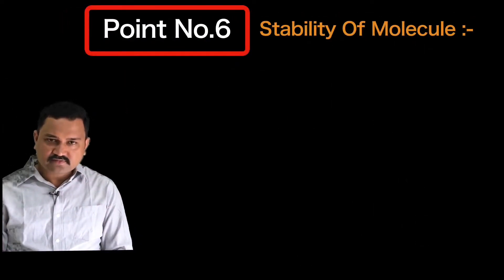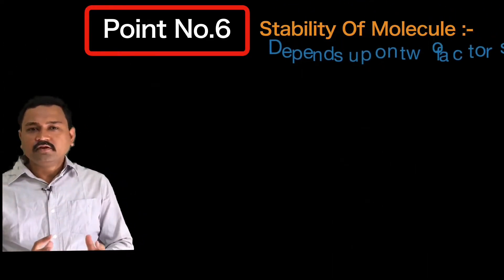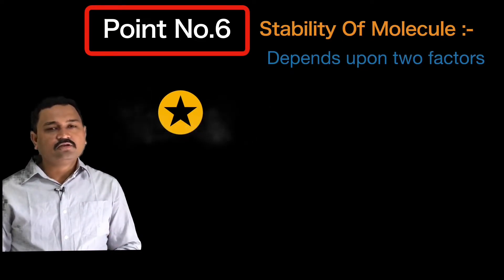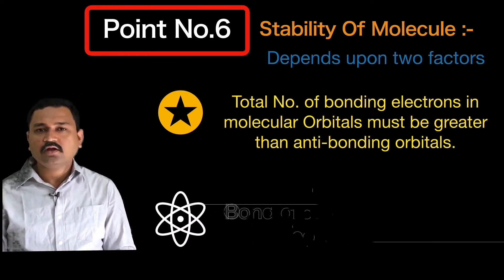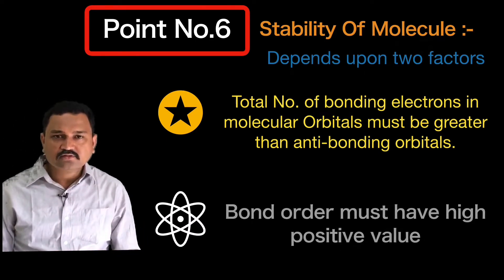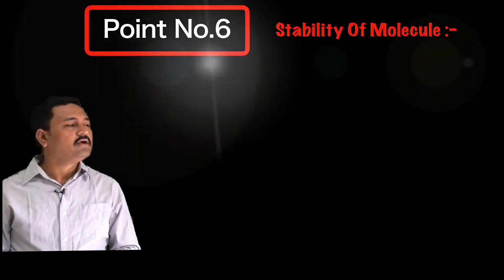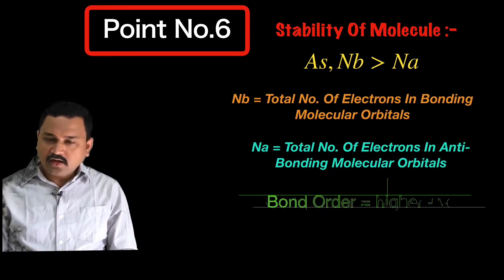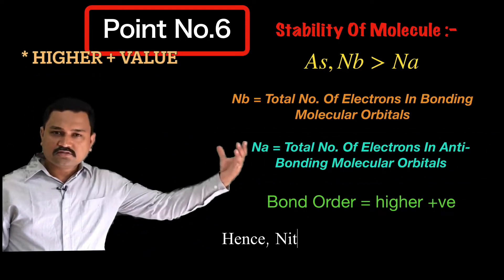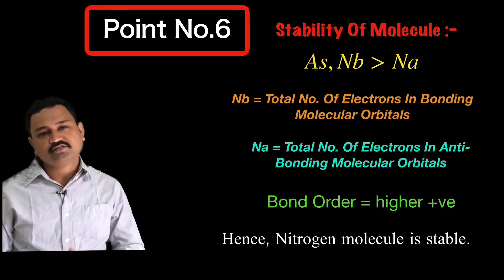Point number six: the stability of the nitrogen molecule. The stability depends on two factors: the relative number of bonding versus antibonding electrons, and the bond order. Here the total number of electrons in bonding molecular orbitals is greater than in antibonding molecular orbitals (Nb > Na), and the bond order is a positive value of 3. Hence the nitrogen molecule is highly stable.